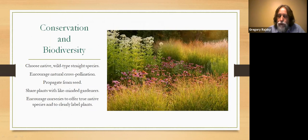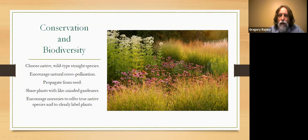Choose the true species if you can. Encourage cross-pollination. Propagate from seed rather than moving plants from the wild where possible. Share your seeds with like-minded gardeners. Share your cuttings when you thin something from your garden — find it a good home; there are many people looking to establish native plant gardens. Encourage any retail outlet or grower you do business with to offer the true species, and where they cannot, encourage them to label the product truthfully and carefully.